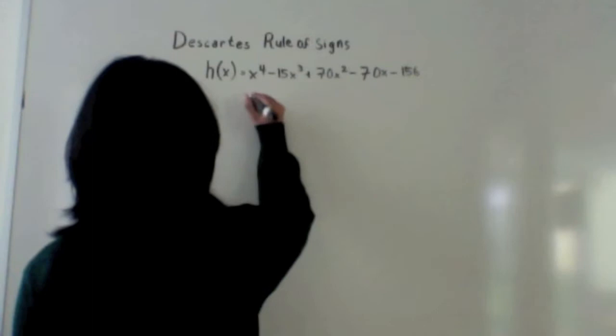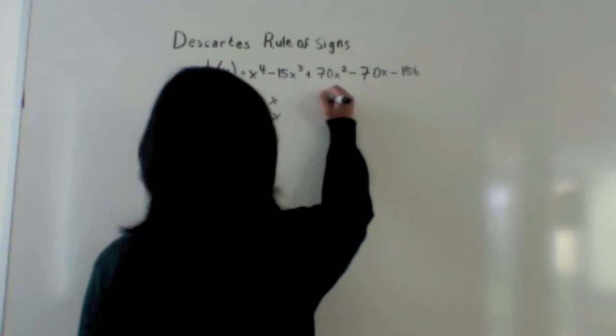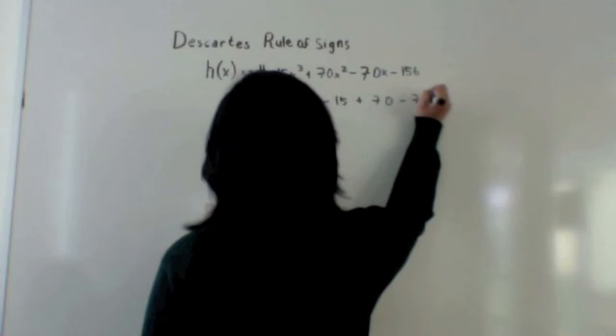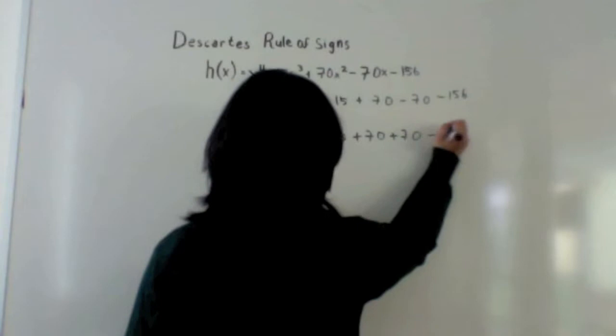You place 1 equals x and negative 1 equals x. So now you just replace all of the x's with 1. You get 1 minus 15 plus 70 minus 70 minus 1. And for negative 1 you get 1 plus 15 plus 70 minus 156.